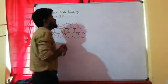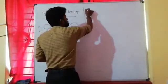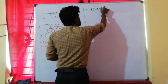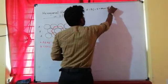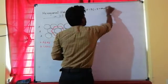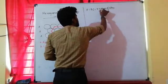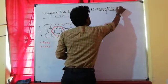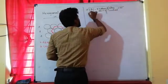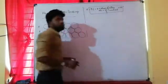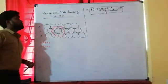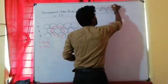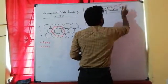So packing efficiency in 2 dimensions formula is: percentage packing efficiency = Z × area of atom / area of unit cell × 100. The area of the atom in 2 dimensions is a circle, and the area of a circle is πr².